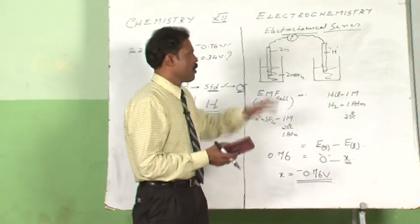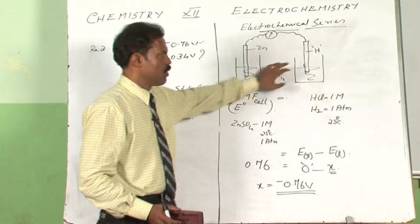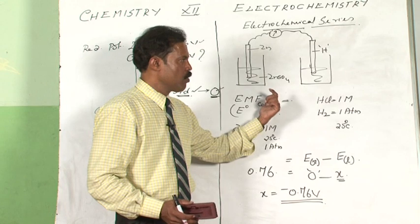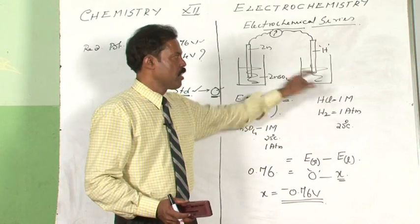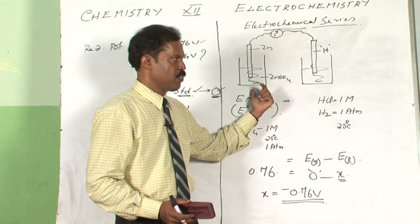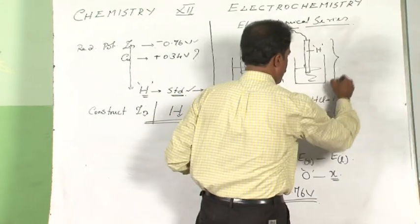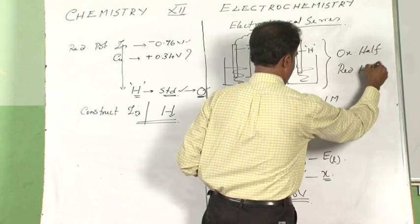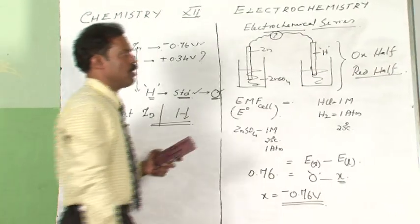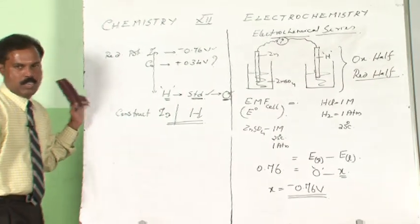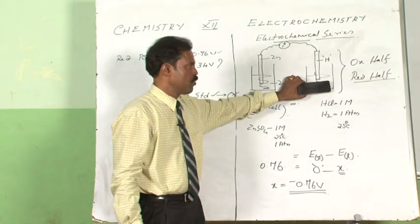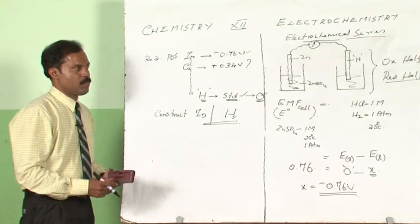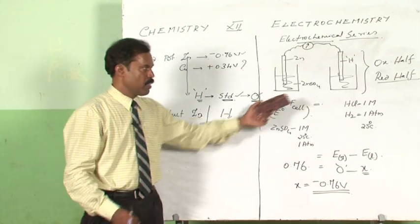What you need to understand here is that zinc is acting as the oxidation half and hydrogen is acting as the reduction half. When we try to do the same thing with copper, it will be the other way around — copper will act as the reduction half and hydrogen will act as the oxidation half. It depends on the other metal with which it is paired. This is how the entire electrochemical series is generated. The standard selected is the hydrogen electrode.